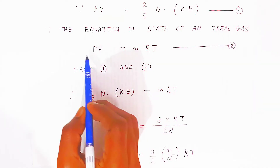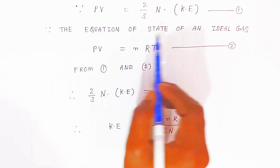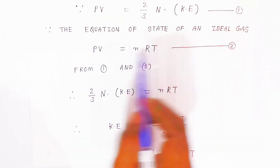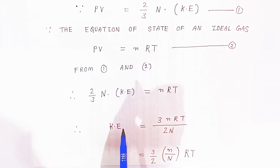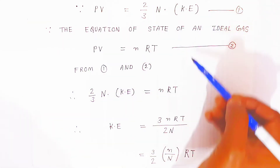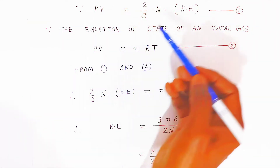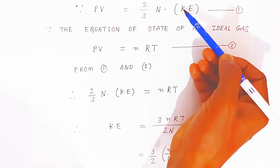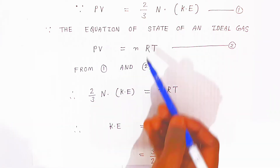Now, PV is also known from the equation of state of an ideal gas: PV = nRT. Since both expressions equal PV, we equate them and write nRT on one side.